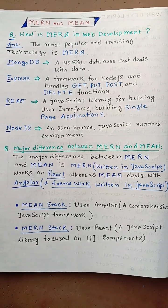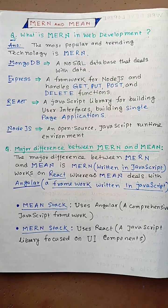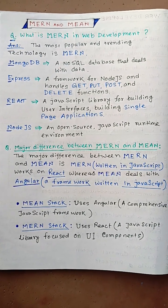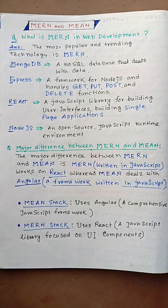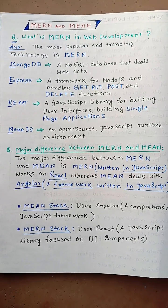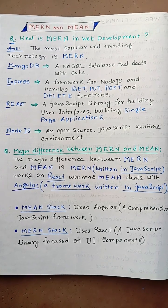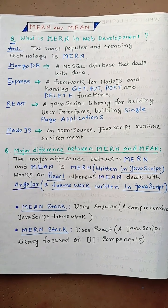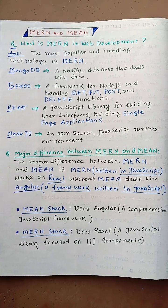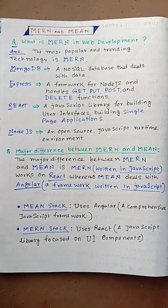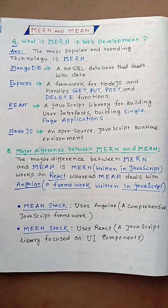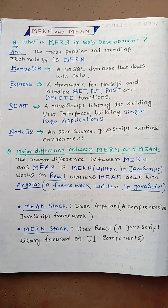The most popular and trending technology is MERN. M for MongoDB, a NoSQL database that deals with data. E for Express, a framework for Node.js that handles GET, PUT, POST, and DELETE functions. R for React, a JavaScript library for building user interfaces or single-page applications. N for Node.js, an open-source JavaScript runtime environment.